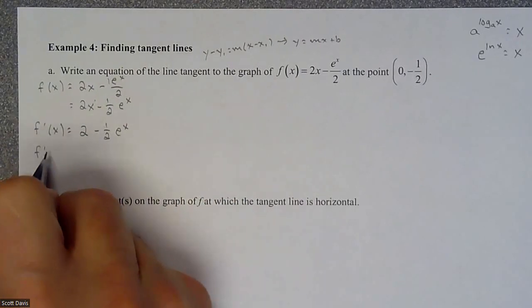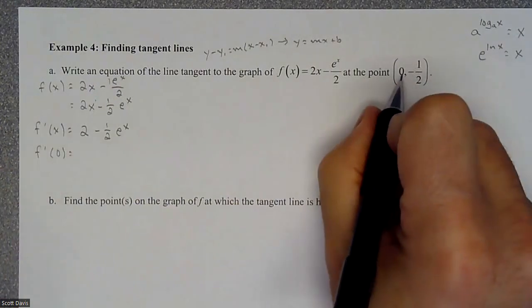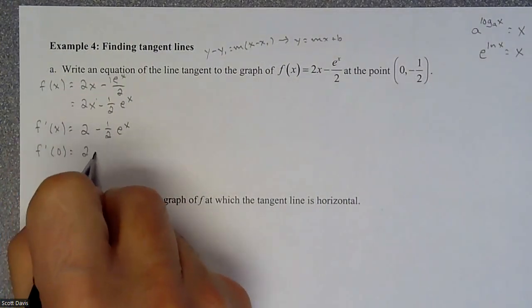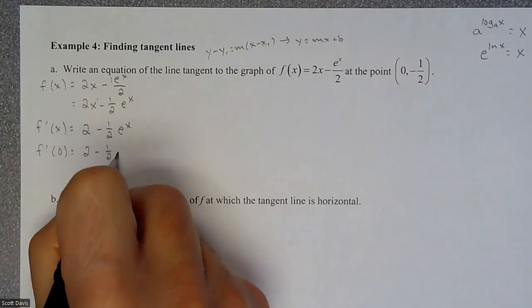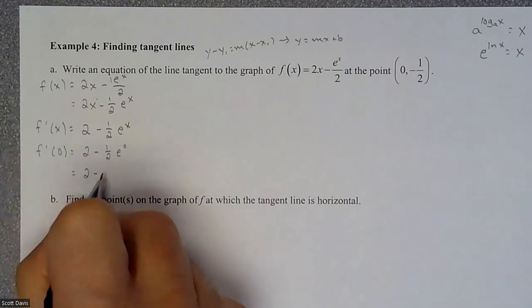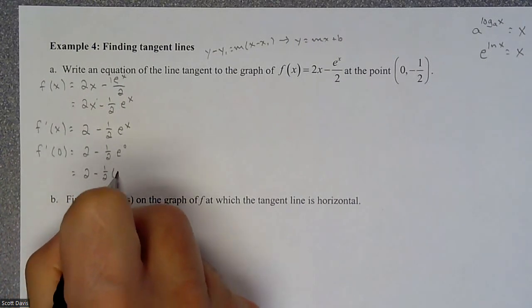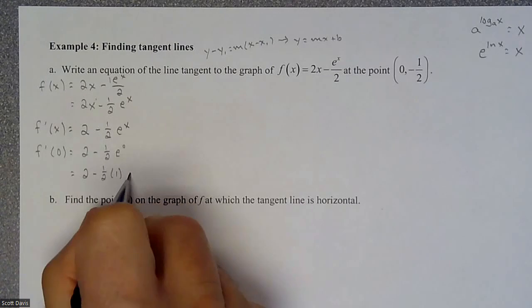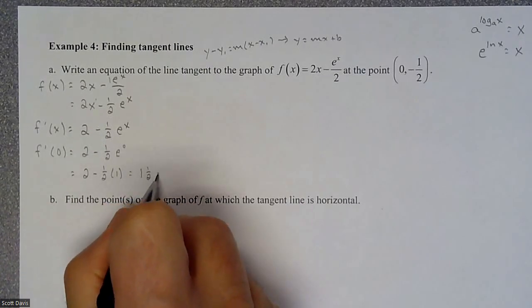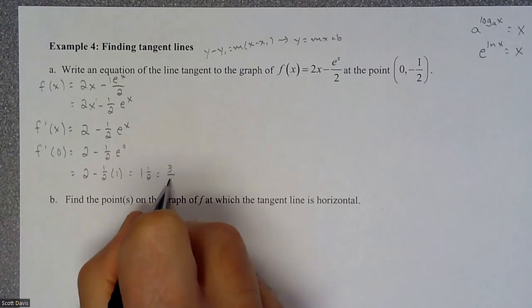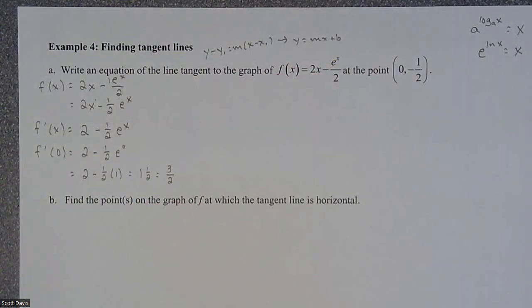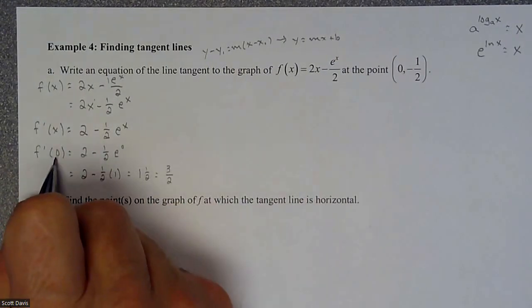derivative of e to the x is e to the x. So that is our slope equation, which means, if we wanted to find the slope at 0, because that's what they're asking for, we would now just plug 0 into this equation. So 2 minus 1 half e to the 0 is going to be 2 minus 1 half times 1. So 2 minus 1 half is going to be 1 and 1 half, which may be 3 halves, might be a little bit nicer to kind of use as our slope.